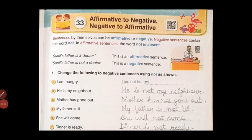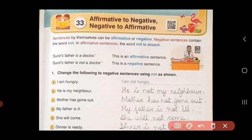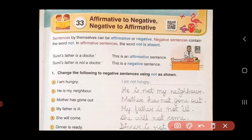Good morning children, hope you are fine at home. Today let us do lesson 33 from the English grammar book: affirmative to negative, negative to affirmative. Affirmative means positive, so today you will learn about positive sentences, which we call affirmative sentences, and negative sentences, and how to change them to each other.